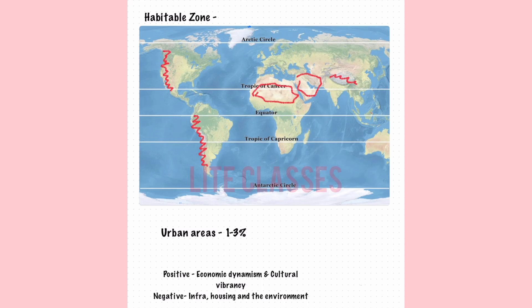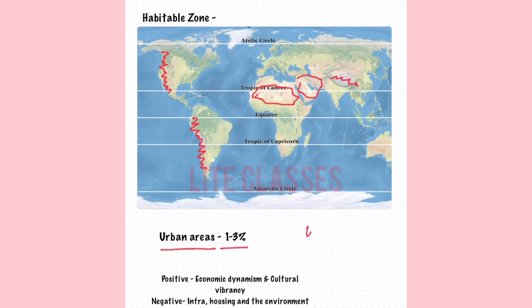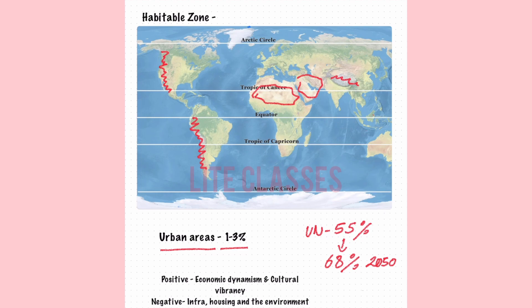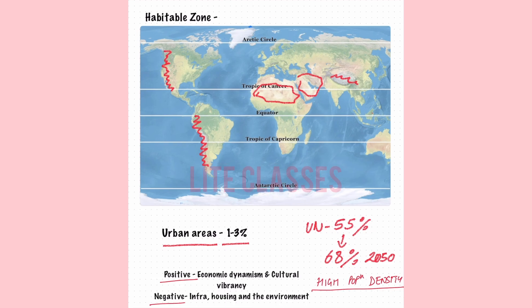Urban areas occupy a relatively small portion of the earth's total land. Globally, urban regions take up about 1 to 3% of the land. According to the UN, 55% of the world's population lives in urban areas, and this figure is projected to increase to 68% by 2050. People migrate from rural to urban settings in search of jobs, education, and other opportunities. This disparity — where a majority of the global population lives on a small fraction of land — results in high population density in urban areas, which is both a strength and a challenge: it can lead to economic dynamism and cultural vibrancy, but also poses challenges related to infrastructure, housing, and environment.